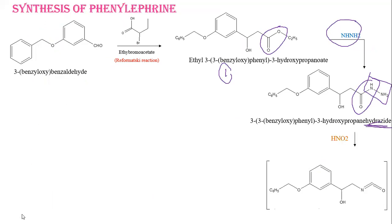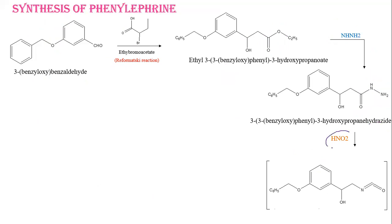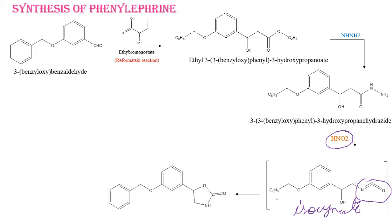Once the hydrazide has been formed, it undergoes treatment with nitrous acid — HNO2, not HNO3. This produces an unstable intermediate specifically called isocyanate, with the formula N=C=O. The hydrazide reacts with nitrous acid to produce the intermediate isocyanate. Since isocyanate is unstable, it immediately undergoes intramolecular rearrangement to produce a heterocyclic molecule called oxazolidine, which is a five-membered heterocyclic ring.